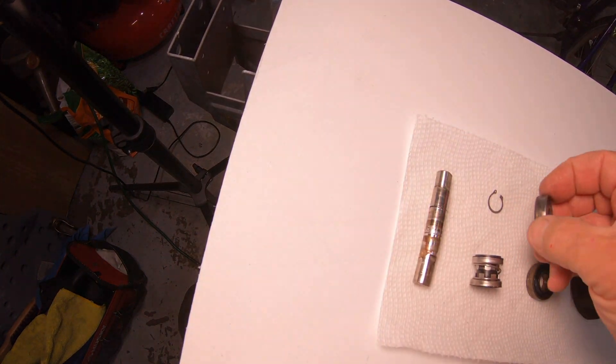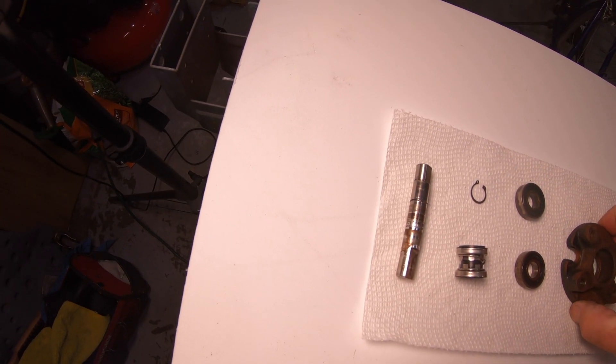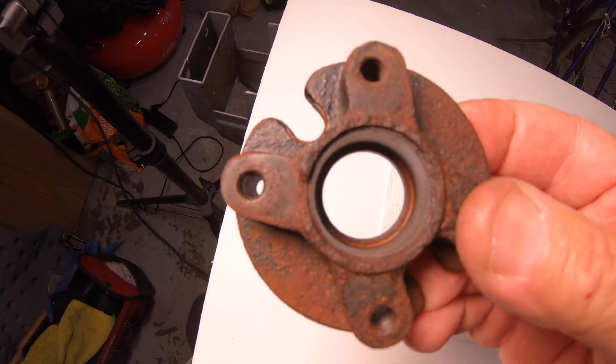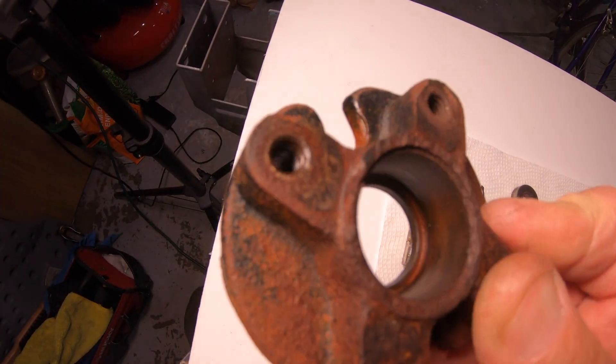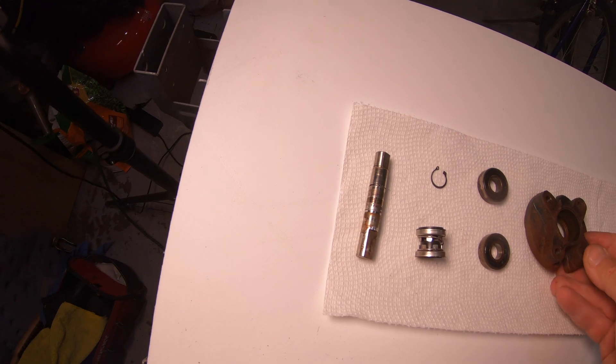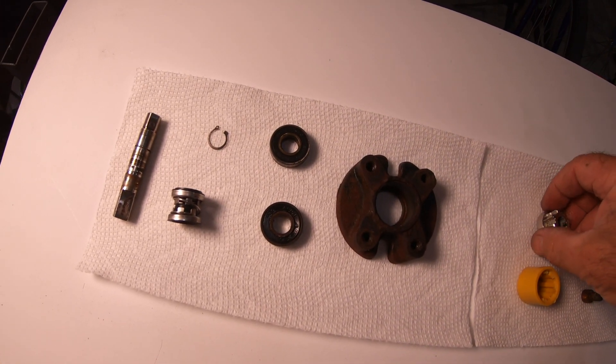When it seized up, the little yellow coupler shaft that connects the water pump impeller to the crankshaft of the engine kind of just sheared away, which is what it's supposed to do to prevent any damage to the generator. So I had taken everything apart and cleaned it all up.